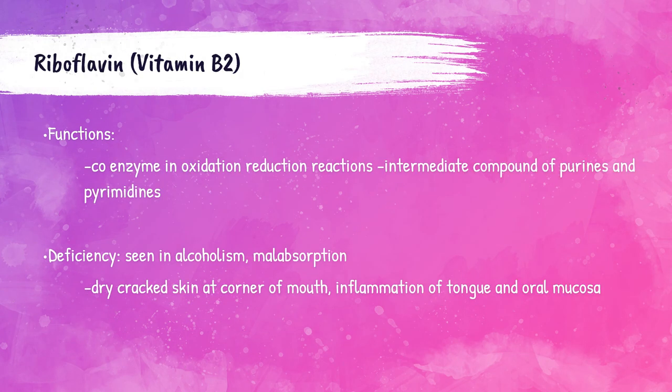Vitamin B-2, or riboflavin, is a coenzyme in oxidation-reduction reactions. A deficiency of riboflavin is caused by a reduced dietary intake due to alcoholism or malabsorption. Deficiencies of this vitamin can cause inflammation of the tongue and mouth, and can cause cracked and dry skin at the corners of the patient's mouth.